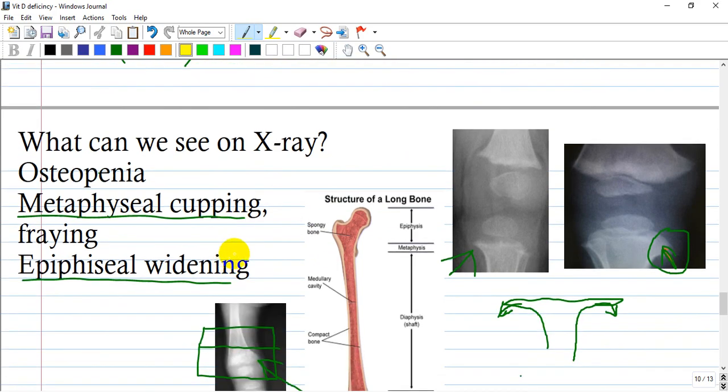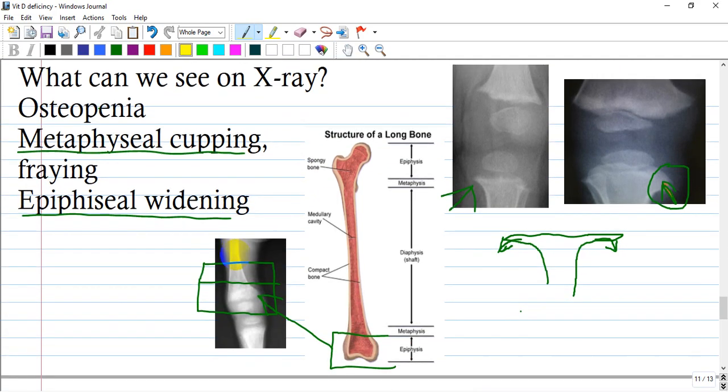What you can see on x-ray: osteopenia, metaphyseal cupping and fraying. Look at this picture - you see a cupping with fragile spur-like structures that are easily deformed and fractured during any simple trauma.